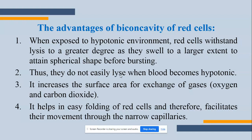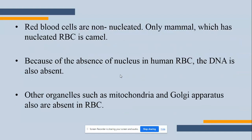The biconcave shape helps in easy folding of red cells, and therefore facilitates their passage or movement through narrow capillaries. Blood vessels vary in diameter — some are thick and some are small — and in capillary areas the diameter is very thin. So RBCs can easily pass through and squeeze into these narrow environments. Without this shape, they would create obstruction, and the force of blood flow could cause the RBCs to break.